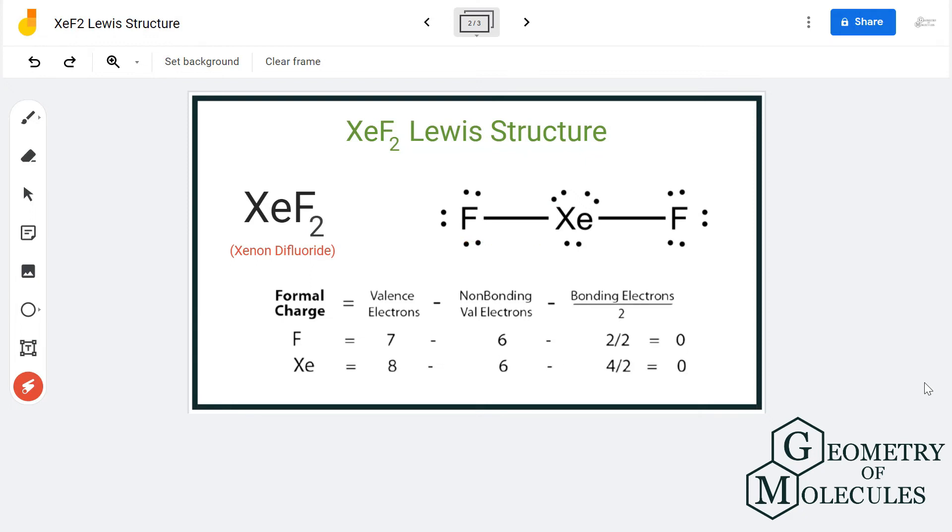What we will do is place these two electrons on xenon. So now it has more than eight electrons in its outer shell, and that is fine because, as I said earlier, it is an exception to the octet rule.